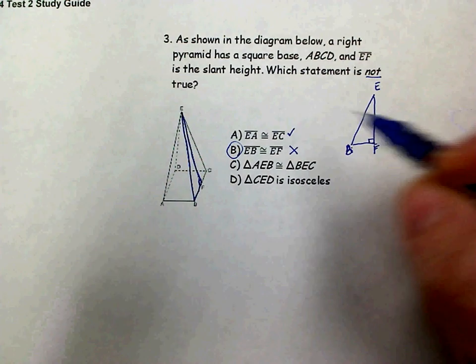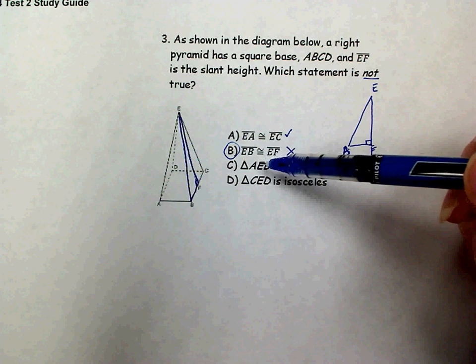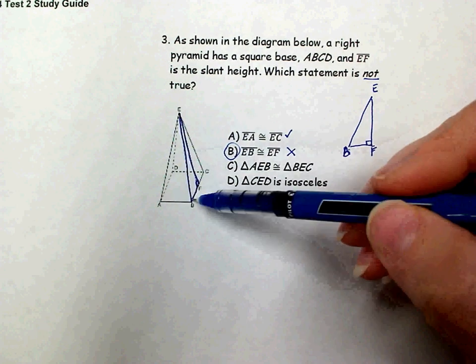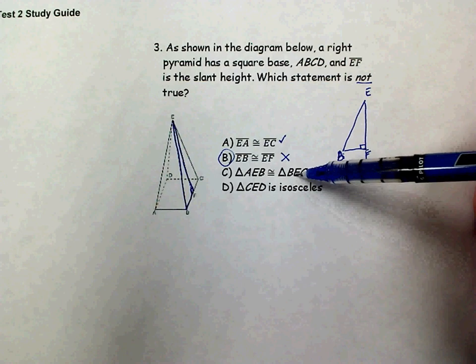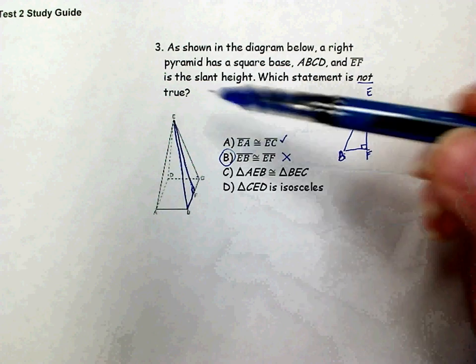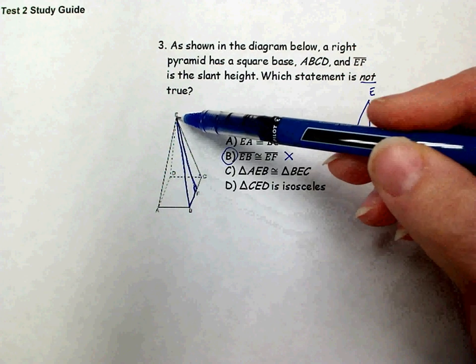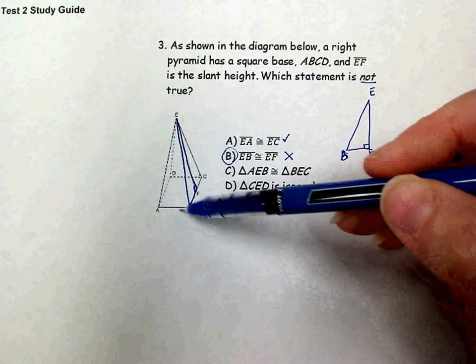So that's our answer to the problem but let's look at the other two choices. Triangle AEB is this face on this side, this triangle, and BEC is the triangle on this side, the right side. Since each one of these from the apex to the vertices are the same length and this is a square so these sides are the same length, those are congruent triangles to each other.